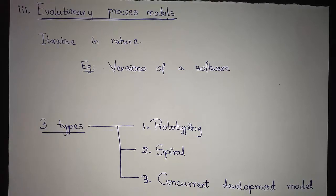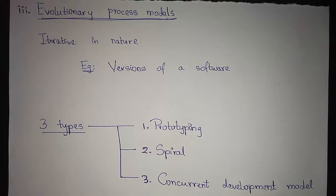These process models are iterative in nature. Examples are like versions of software. Let's say we have Photoshop — Photoshop 1, Photoshop 2, CS6, CC and all. Those are versions of Adobe Photoshop. That is how evolutionary process models exist.